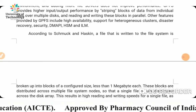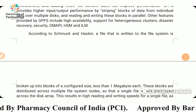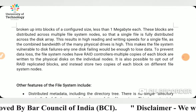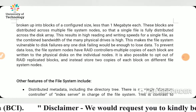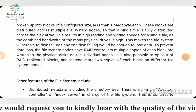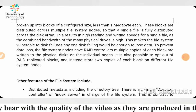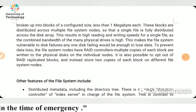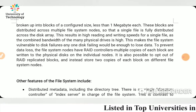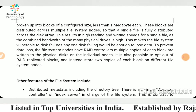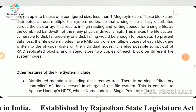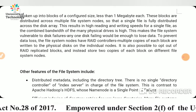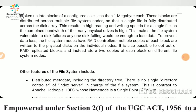A file written to the file system is broken up into blocks of a configured size, less than one megabyte each. These blocks are distributed across multiple file system nodes so that a single file is fully distributed across the disk array. This results in high reading and writing speeds for a single file, as the combined bandwidth of the many physical drives is high. However, this makes the file system vulnerable to disk failures, as any one disk failing would be enough to lose data.